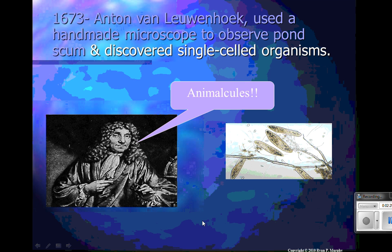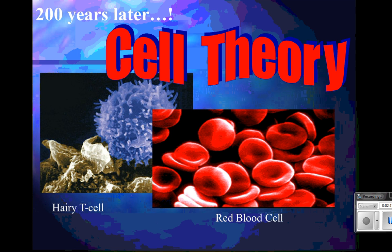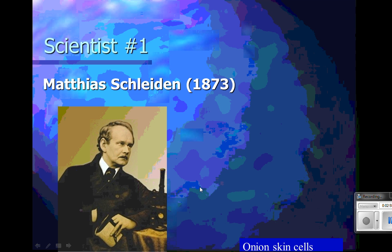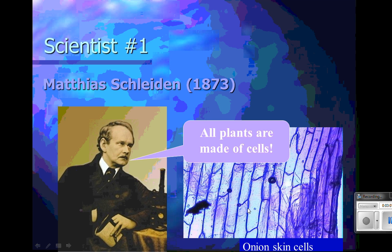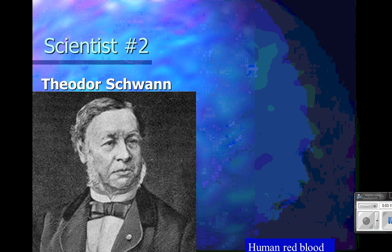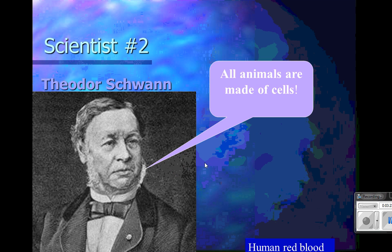He called them animalcules — that's Latin. Can you imagine looking through a microscope, knowing nothing about cells, and seeing them moving, but they're not moving when you look with the naked eye? Then 200 years passed where people thought about spontaneous generation; they didn't realize something had to come from a cell. Matthias Schleiden looked at the onion skin cell and determined that all plants are made of cells. He worked with Theodore Schwann, who determined that all animals are made of cells.